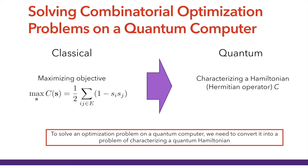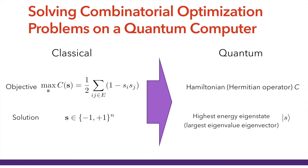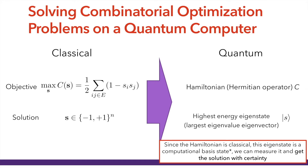So how do we take this classical problem and map it onto a quantum computer? In order to solve an optimization problem on a quantum computer, we have to take this classical optimization problem and convert it into a problem of characterizing a quantum Hamiltonian — or in the language of mathematics, a Hermitian operator. Our solution classically, which is a binary string, now becomes the highest energy eigenstate, or the largest eigenvalue eigenvector, of this Hermitian operator. Since the Hamiltonian is classical, we know this eigenstate is a computational basis state.